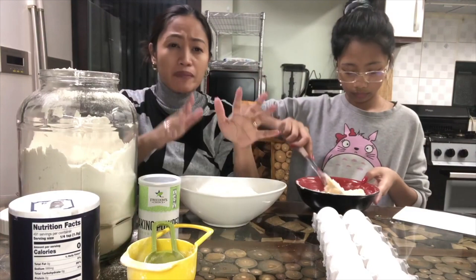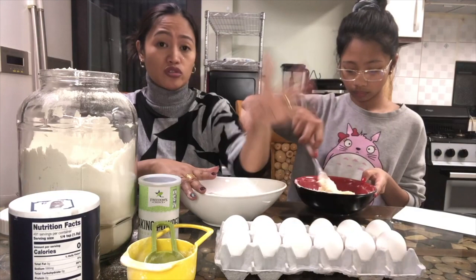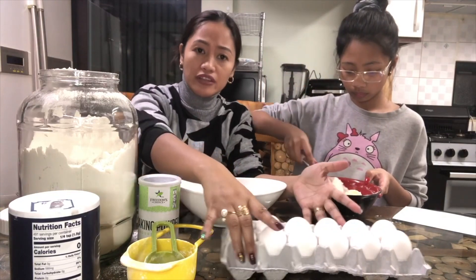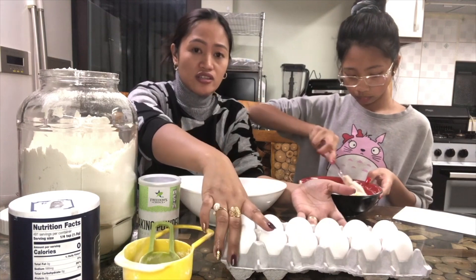Now when we buy eggs, usually they come in dozen. So one dozen is equal to twelve pieces. Now we can relate fraction to this again. So this twelve eggs is considered one whole.